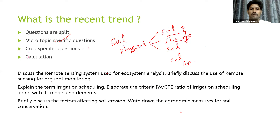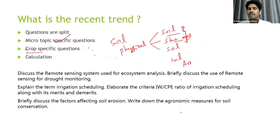For crop-specific questions, you can refer to the agronomy area for POP, and for weed management, irrigation, and nutrient management, prepare crop-specific content. For forestry, prepare for at least the important tree species. I hope this video will be useful for you. Thank you.